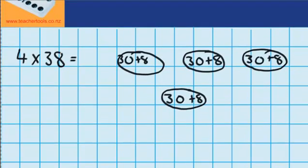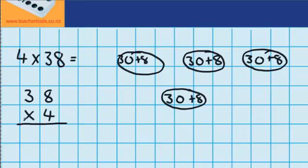Now in this standard written form we're going to write one number — the bigger number — up the top, and down below it we're going to write the smaller number. Note how I'm being really careful to write one number in each box here, because the neater you are the easier you're going to find this method. I also need to write in what I'm doing — whether I'm multiplying, adding, or subtracting. So obviously in this method here I'm multiplying.